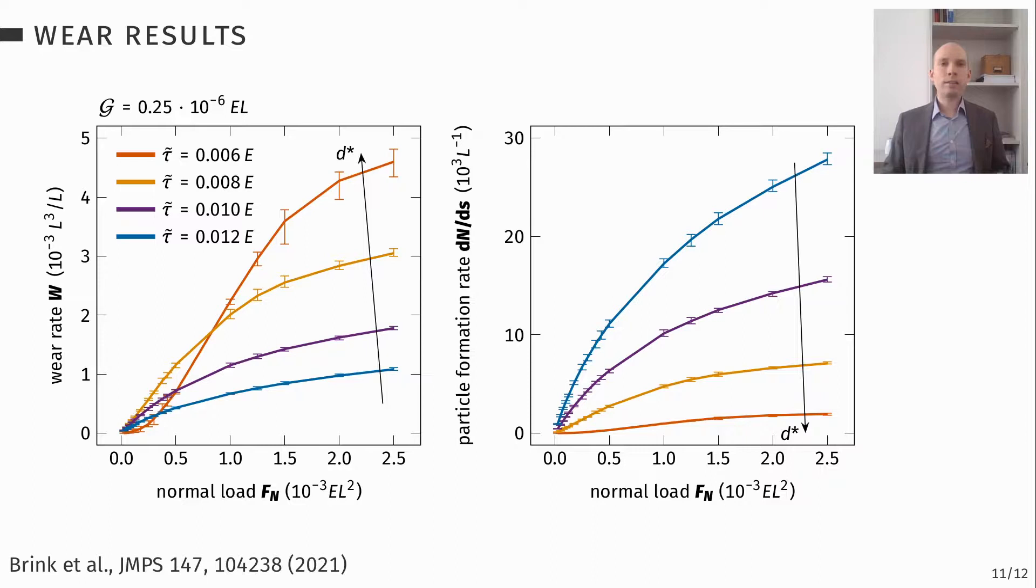But you can also see that at low loads, the softest material has almost no particle formation. And the reason for this is that you need to have junctions that are bigger than d star. And d star is quite big for soft materials. So if you don't put a lot of normal load on this, you will maybe not have many or not any junctions that fulfill the criterion for wear particle formation, which is why you have this low wear regime here.